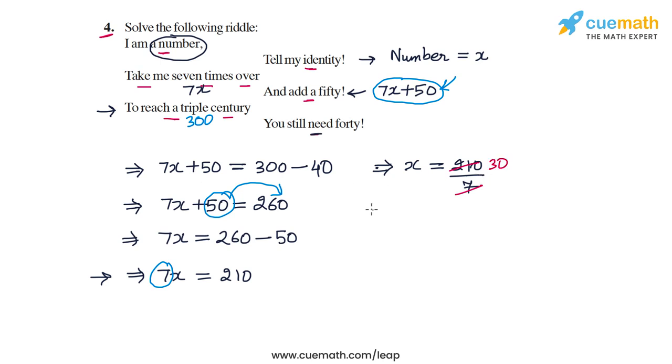And this means that x, the value of x is 30. So, the unknown number is 30. Let's verify whether this is correct or not. So, take me 7 times over. So, 7 times 30 is 210. And add a 50. 210 plus 50 will be 260.